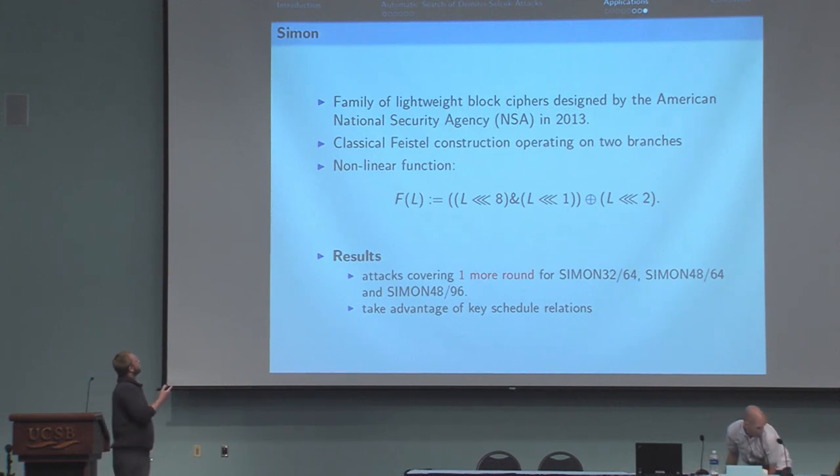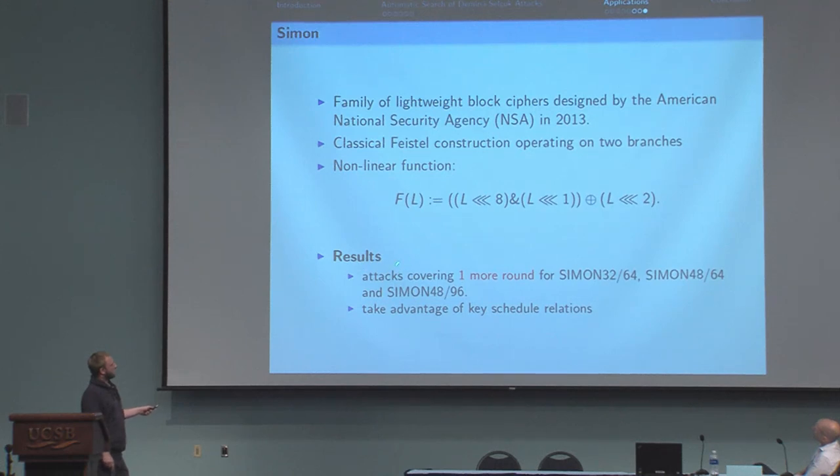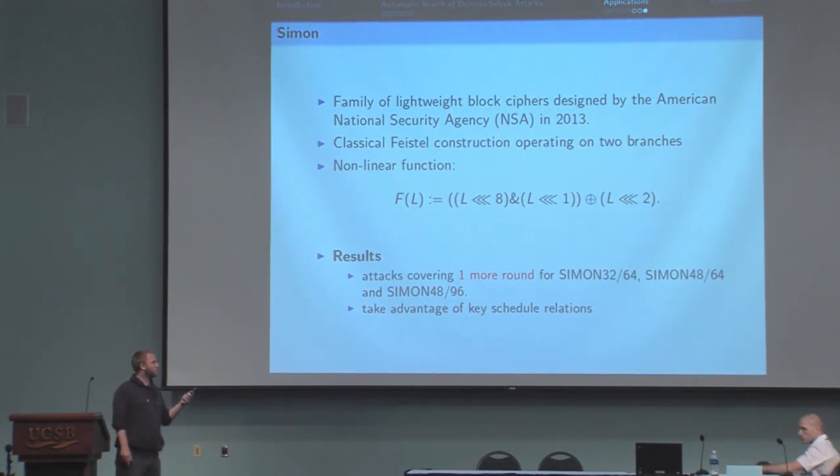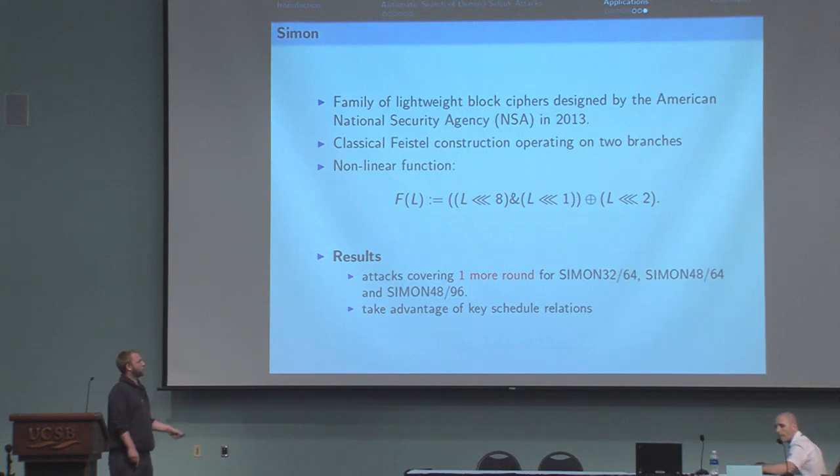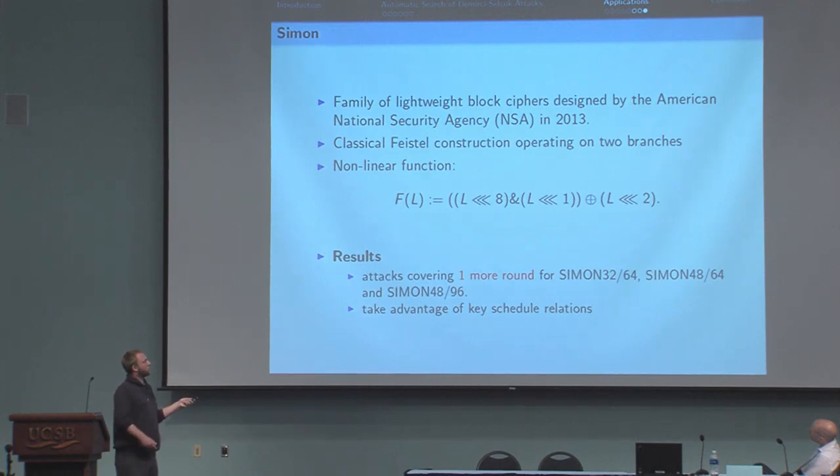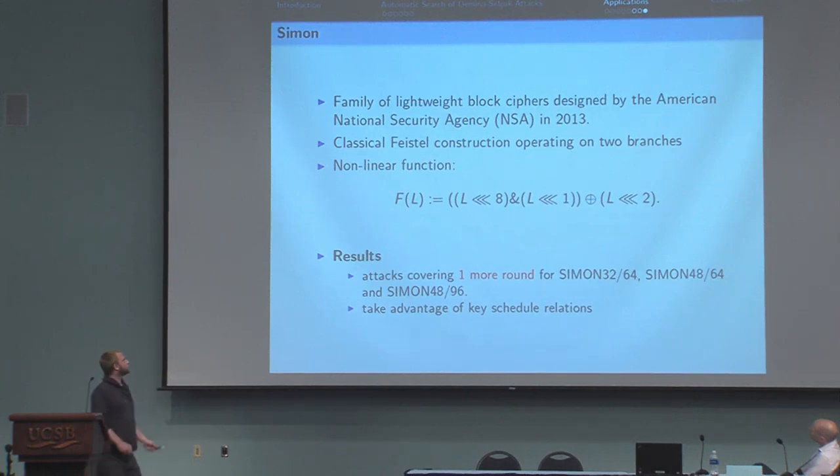We also applied it to the block cipher Simon. We found attacks on one more round for those three versions of Simon. The tool did not find any longer impossible transition, but it found which one to use to take advantage of the key schedule relations. In particular, we found some key bridging technique involving relations involving the first round keys and the four last ones.